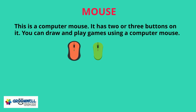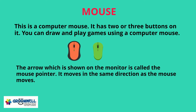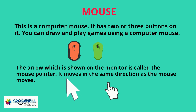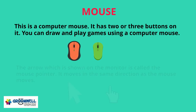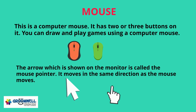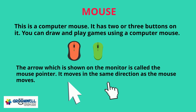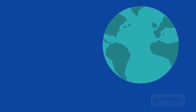The arrow which is shown on the monitor is called the mouse pointer. It moves in the same direction as the mouse moves. Whichever direction you move the mouse, the arrow moves in that same direction. Hope you have understood the chapter.